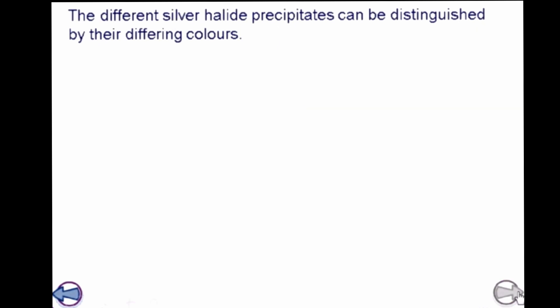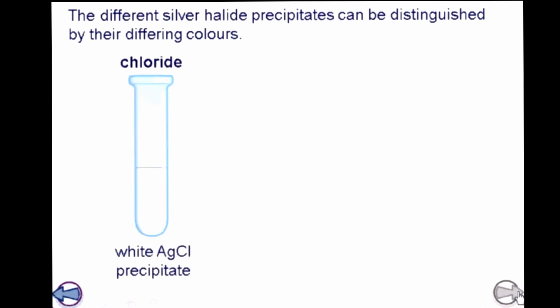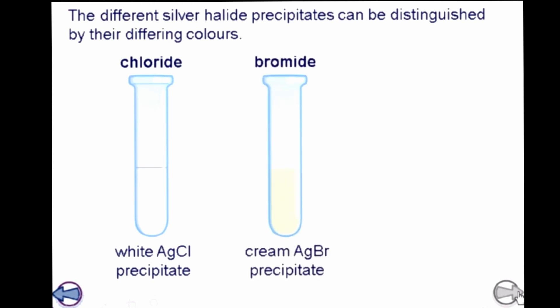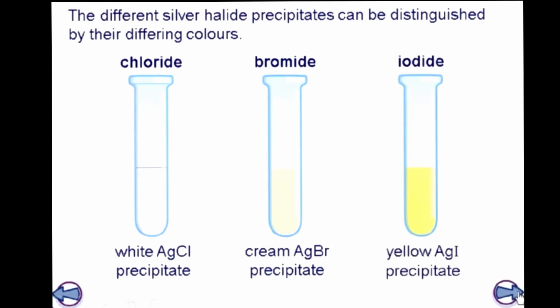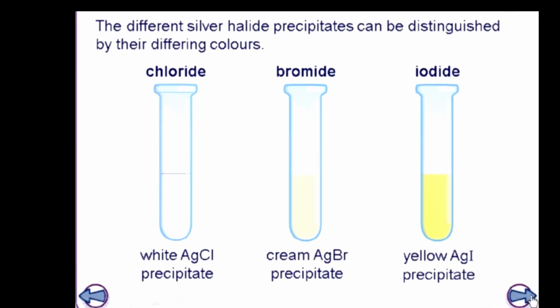Different silver halide precipitates can be distinguished by their color. Chloride gives a white precipitate of silver chloride. Bromide gives a cream-colored precipitate of silver bromide. Iodide gives a yellow precipitate of silver iodide. By the color of the precipitate, we can identify which particular halide is present.